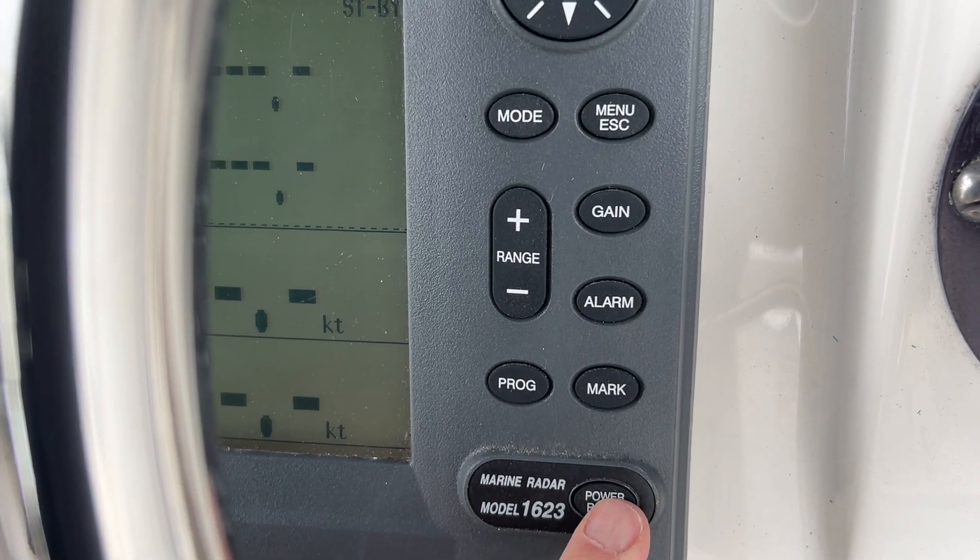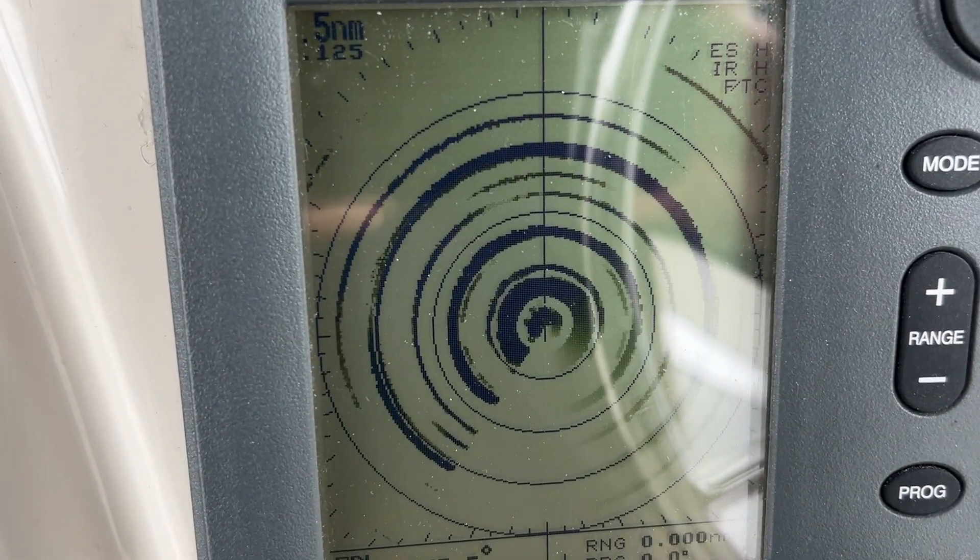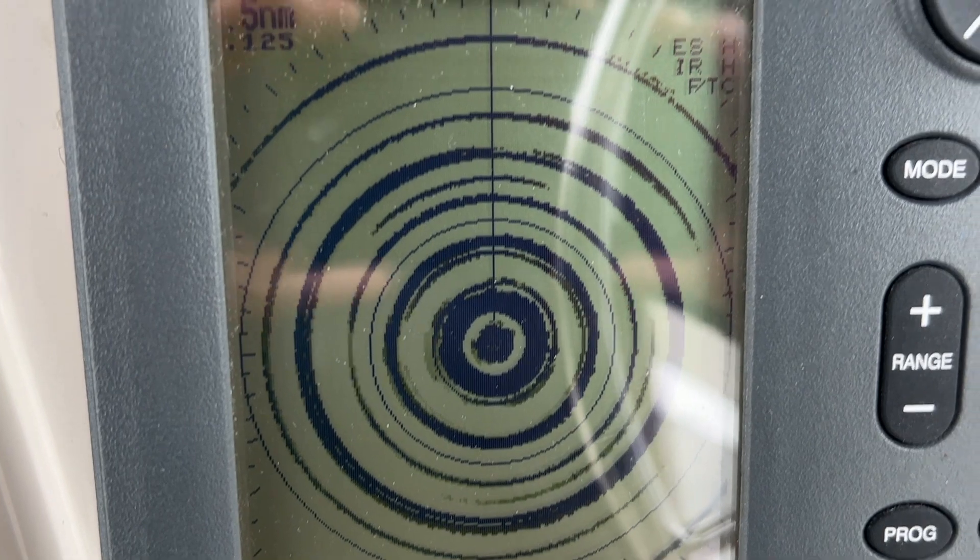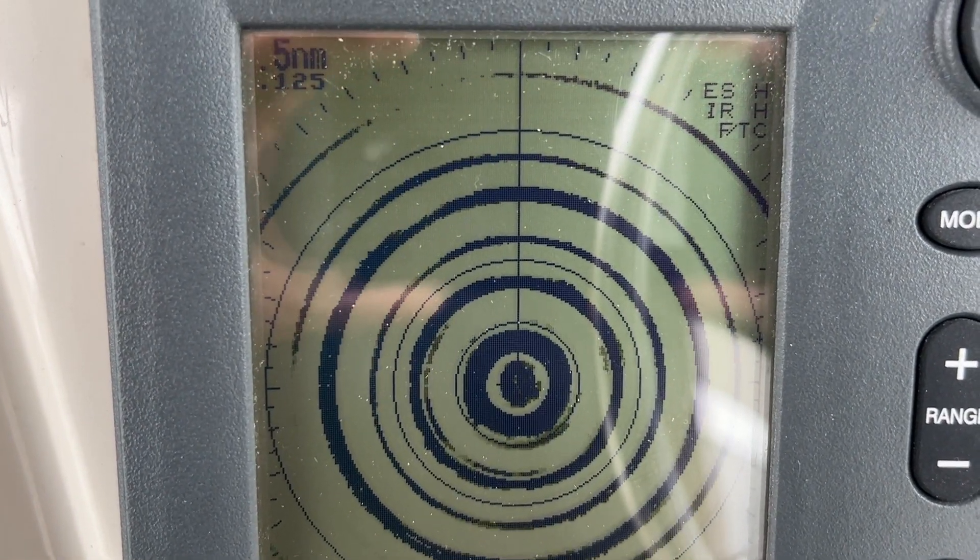Okay, so we're all warmed up and I'm going to activate the radar. You can see what we get here. We get all those circles, nothing but circles, and then an error message is going to pop up here: no heading pulse. That's a problem.